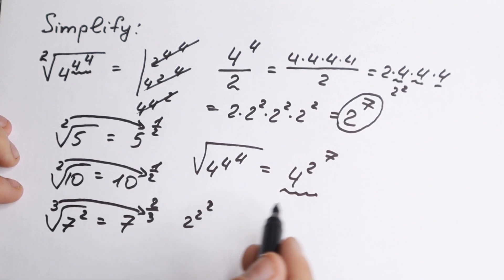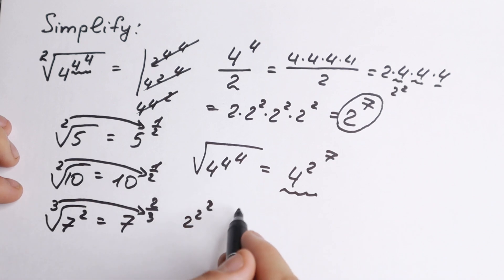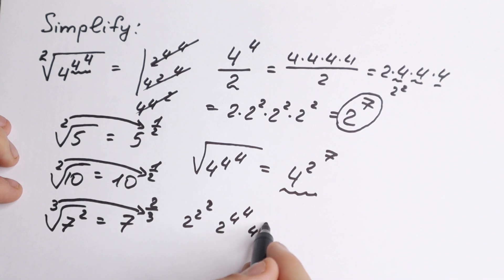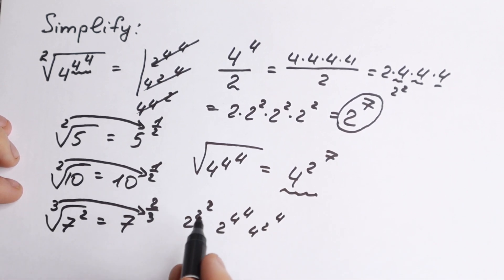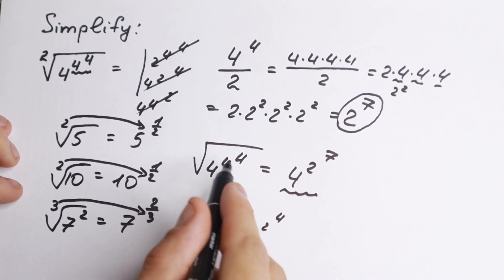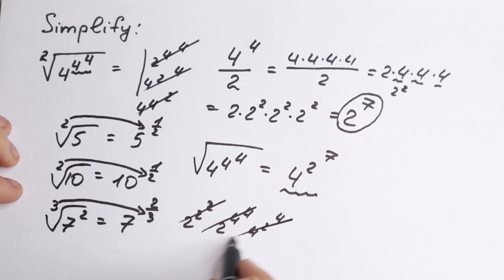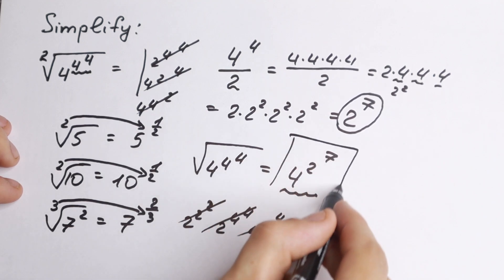Our brain tells us the answer should be 2^2^2. It can be like that, but it's not in our case. It looks like we might have 2^4^4 or 4^2^4. We kind of take the root from one of these elements, but every one of these is incorrect. The correct answer is 4^(2^7).